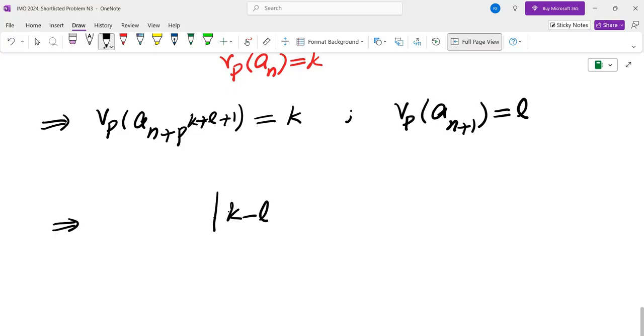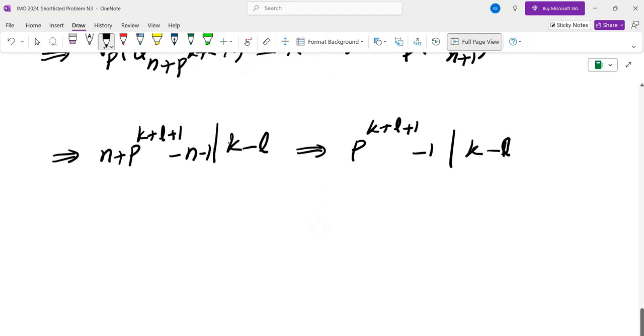Now we know that the exponents also have that property that arithmetic mean of consecutive terms is an integer. So that tells us that K minus L must be divisible by the difference of these indices. So n plus P to the power of K plus L plus 1 minus n minus 1, which means P to the power of K plus L plus 1 minus 1 divides K minus L. And this is a contradiction and that means consecutive terms must be the same, which means the sequence must be constant.